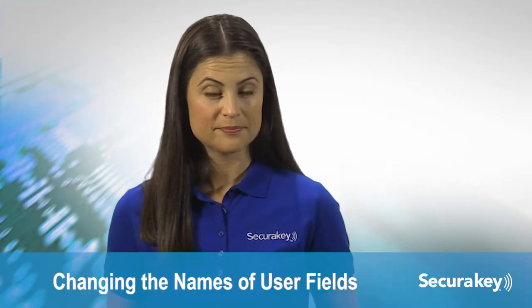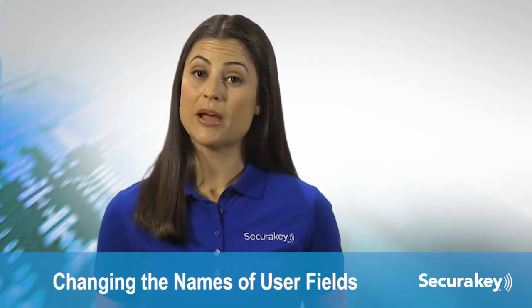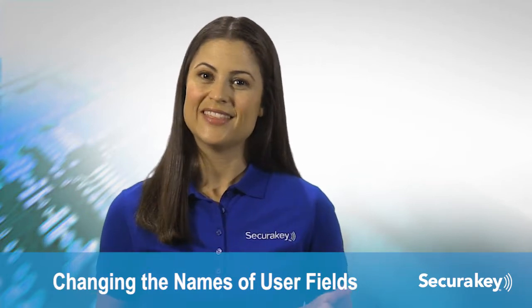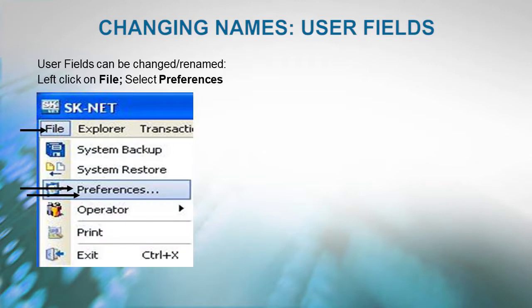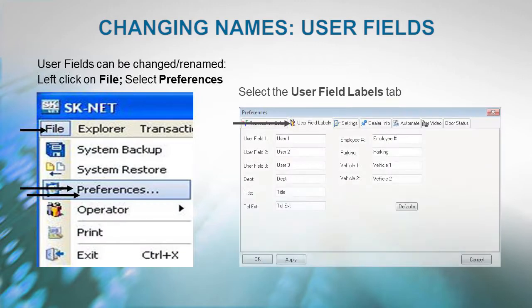If the current user fields do not match your needs, you may change them. First, left-click on File, select Preferences, then select the User Field Labels tab. Now just select any field and replace the default name with your own custom definition.